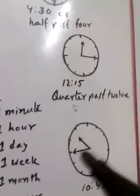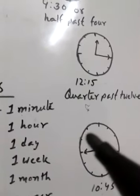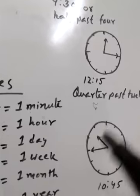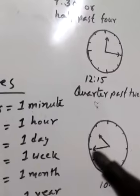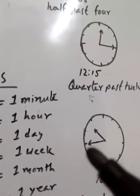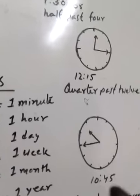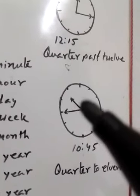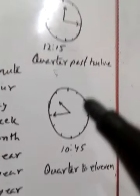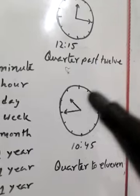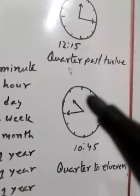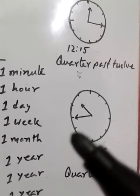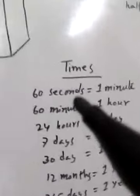When the long hand is between 10 and 11, we read minutes to the next hour. For example, 10:45 means 15 minutes to 11, and we say quarter to 11. 10 to 11 means 10 minutes to 11. 5 to 11 means 5 minutes to 11. 20 to 11 means 20 minutes to 11.